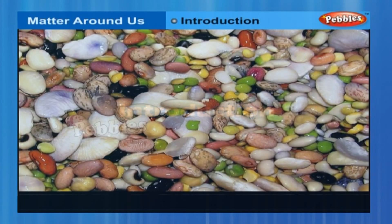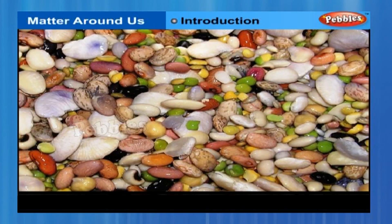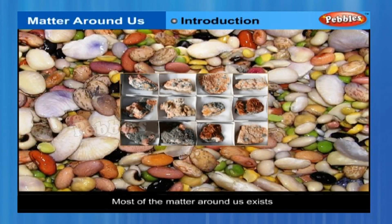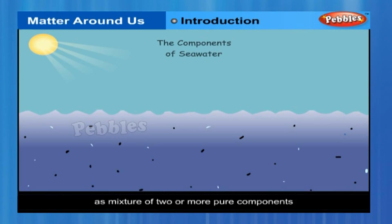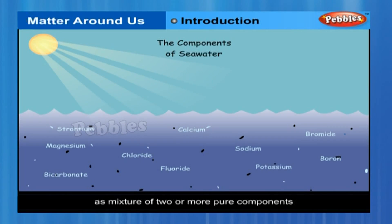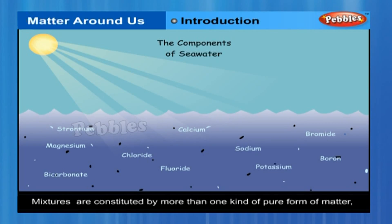As we look around, we can see that most of the matter around us exists as a mixture of two or more pure components — for example, seawater, minerals, soil, etc. are all mixtures. Mixtures are constituted by more than one kind of pure form of matter, known as substance.